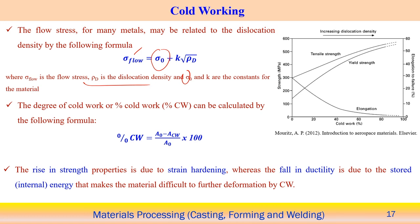From the strength versus cold work figure, elongation is initially very high so we can easily deform the material. But as dislocation density increases, the elongation level gradually decreases. As elongation decreases and dislocation movement becomes more difficult, both yield strength and tensile strength increase with increasing amounts of cold work.